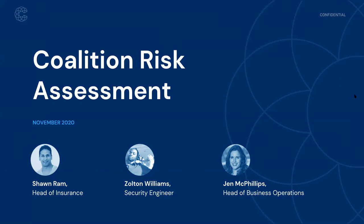My name is Jen McPhillips, and I'm going to be moderating the conversation this morning. I'm excited to be joined by two of my colleagues. First, Sean Ram, who is the head of insurance at Coalition. Sean's been here since the beginning of the company, and he leads all things insurance related from distribution and underwriting all the way through to claims handling and remediation. I'm also joined by Zoltan Williams, who's a security engineer on Coalition's security engineering team. This is the team that's looking for vulnerabilities and threats that may target our policyholders and works in conjunction with our claims and security team to help address those vulnerabilities and make our customers more secure.